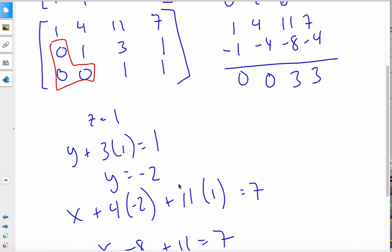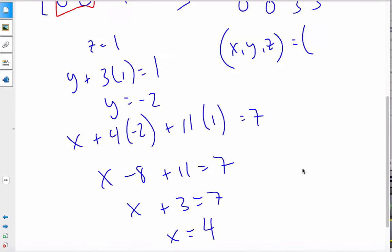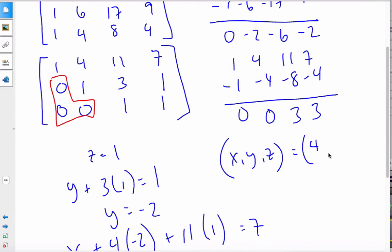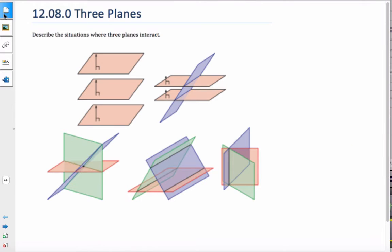And so what it appears is that these three planes intersect in a point (4, -2, 1). These three planes intersect in a point. So if I look at this diagram here, this is the scenario that they intersect in a point.